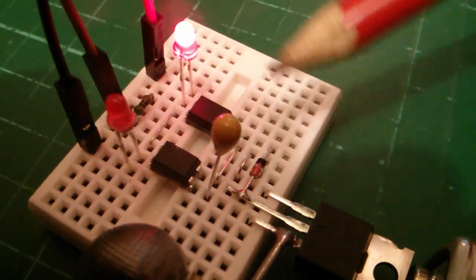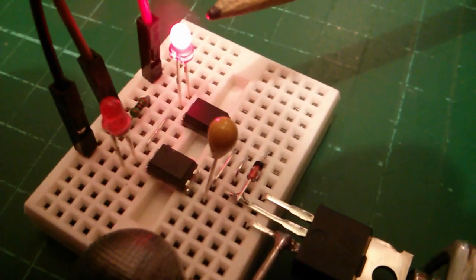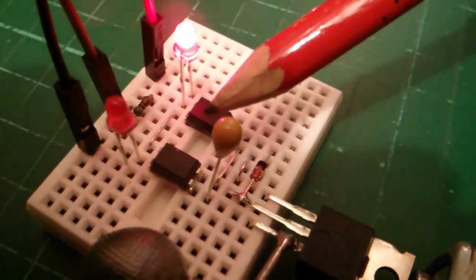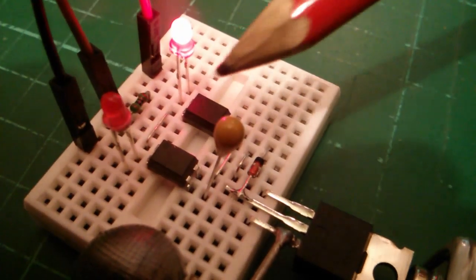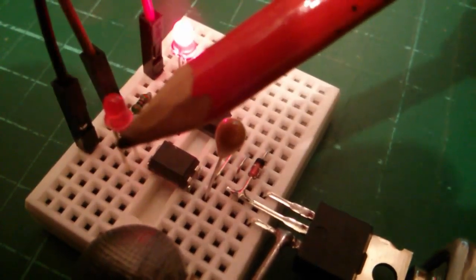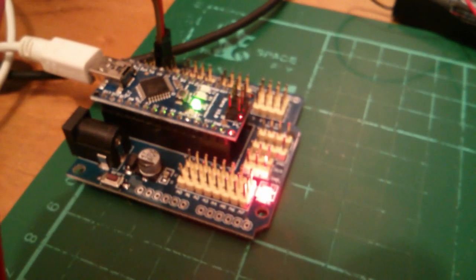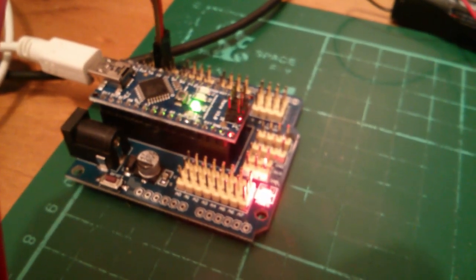The way this works is that you've got a chain of four LEDs: this red one, the opto, the other opto, and the other red LED, straight across 5 volts and 0 volts. The 5 volts is being provided by the USB on the Arduino Nano.